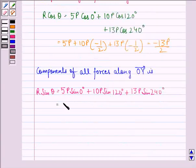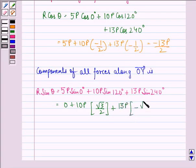This is equal to 0 plus 10p times root 3 over 2 plus 13p times minus root 3 over 2. That is equal to minus 3 root 3 p over 2.